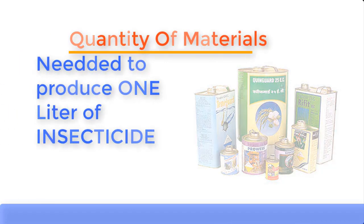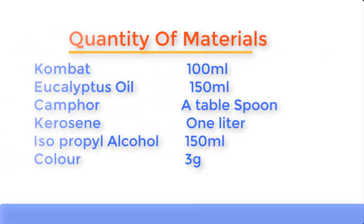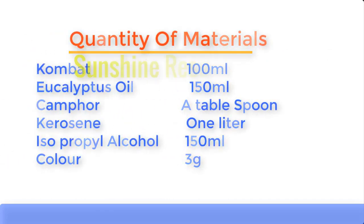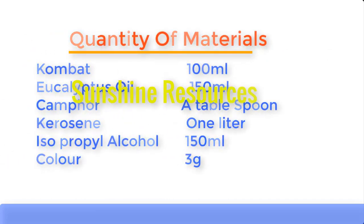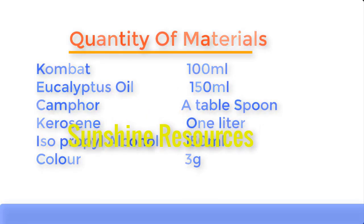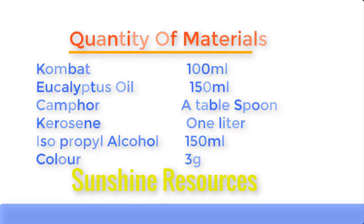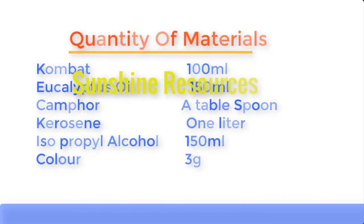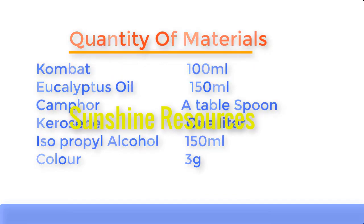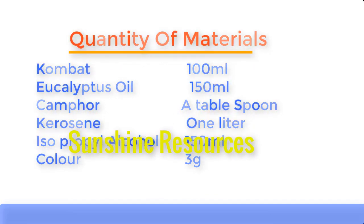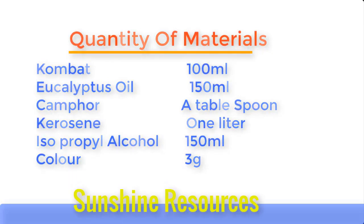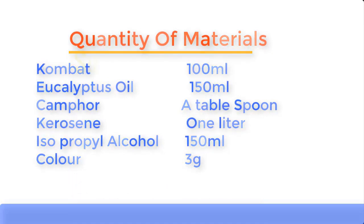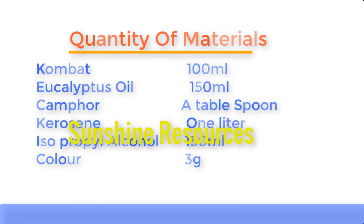Now let's establish the quantity of materials needed to produce one liter of insecticide: compact 100 ml, eucalyptus oil 150 ml, camphor one tablespoon, kerosene one liter, isopropyl alcohol (IPA) 150 ml, and color three grams. Now let me introduce you to these chemicals one by one before we go into the mixing.